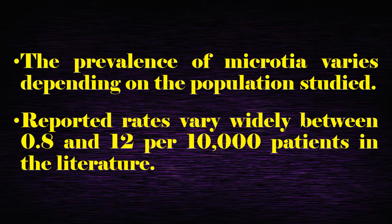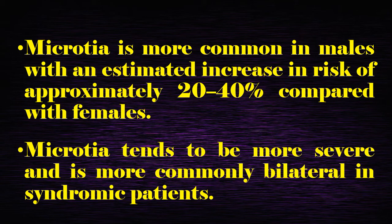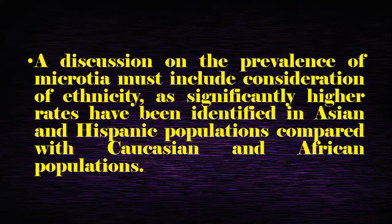The prevalence of microtia varies depending on the population studied. Reported rates vary widely between 0.8 and 12 per 10,000 patients in the literature. Microtia is more common in males, with an estimated increased risk of approximately 20–40% compared with females. Microtia tends to be more severe and more commonly bilateral in syndromic patients. Significantly higher rates have been identified in Asian and Hispanic populations compared with Caucasian and African populations.